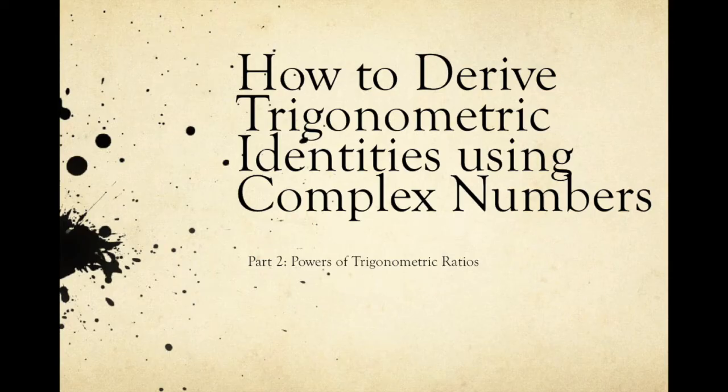Welcome to another lesson video from Jiggy Math. We will be talking about how to derive trigonometric identities using complex numbers, and this is the second part. The first part is about the trigonometric ratios of multiple angles. This time it will be about the powers of trigonometric ratios like cosine to the power of 5, sine to the power of 3, or tangent to the power of 4.